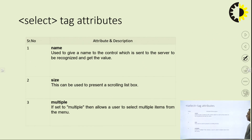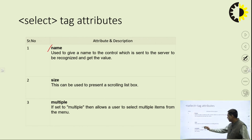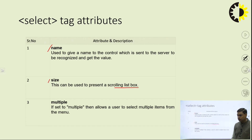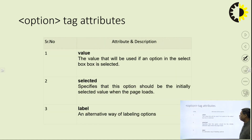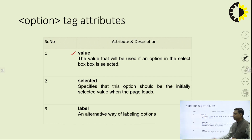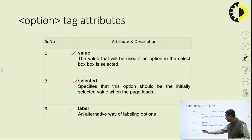Moving to the select tag attributes: the name attribute is available, the size attribute can be used to represent a scrolling list, and if you want to allow selection of more than one option, use the multiple attribute. When set to multiple, it allows a user to select multiple items from the dropdown list. The option tag, which is part of the select tag, has a value attribute, and you can use selected to make a particular option pre-selected, and the label attribute for alternate labeling.